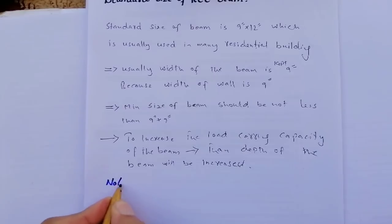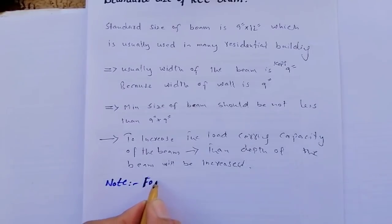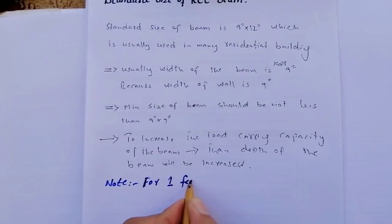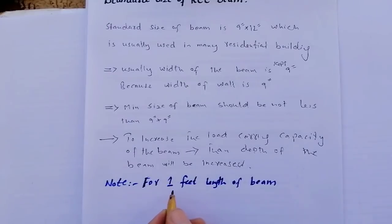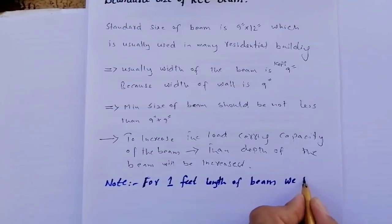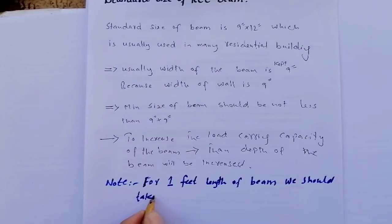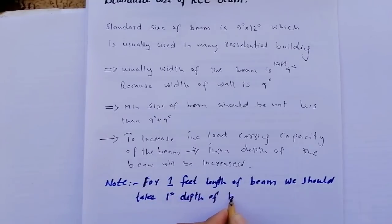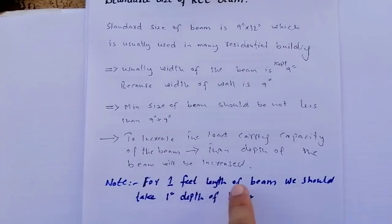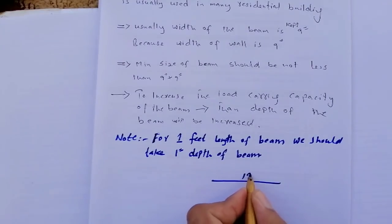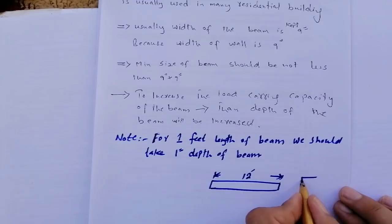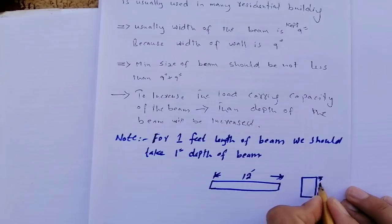One very important thumb rule to note: for one foot length of beam, we should take one inch depth of beam. For example, if the length of the beam is 12 feet — as shown in this long section of the beam — then the depth of the beam should be 12 inch.